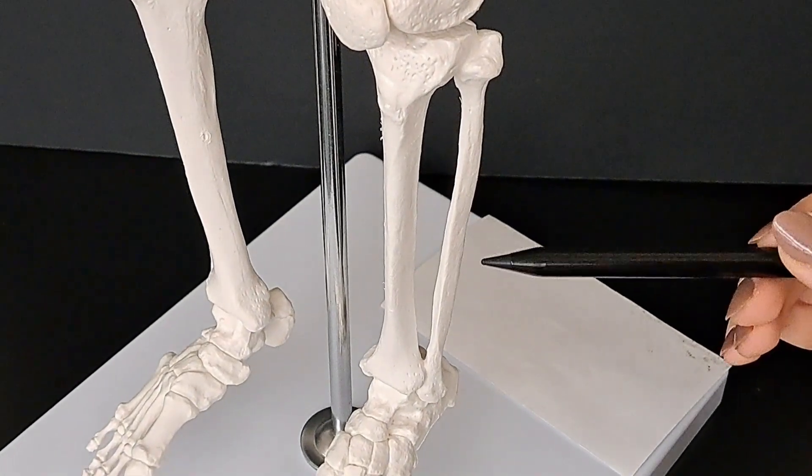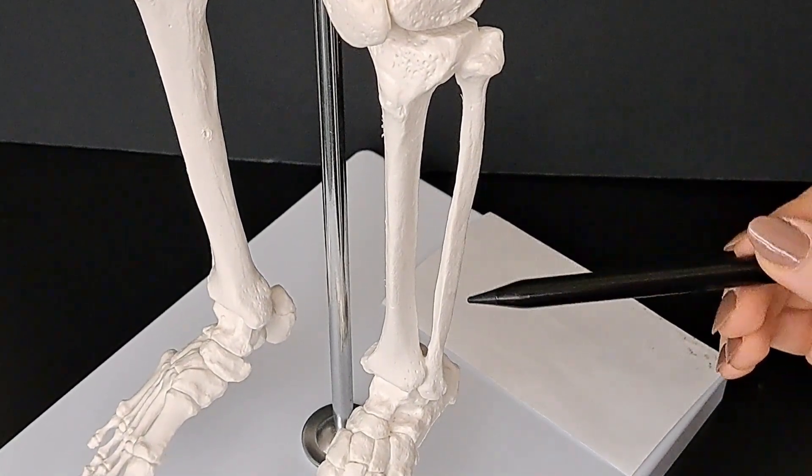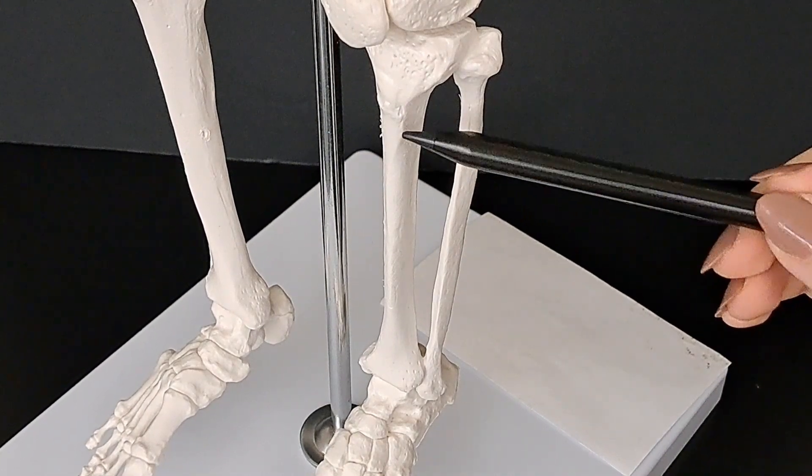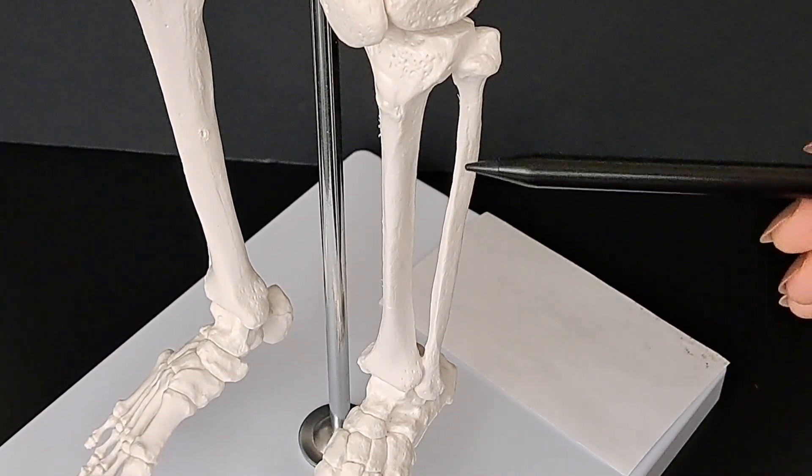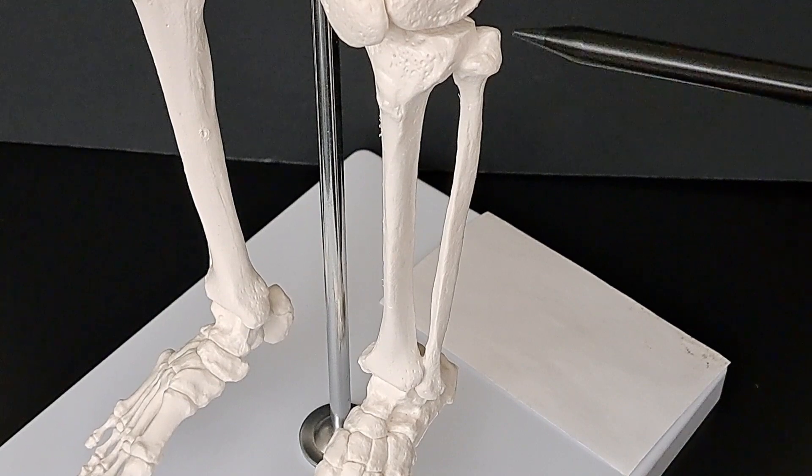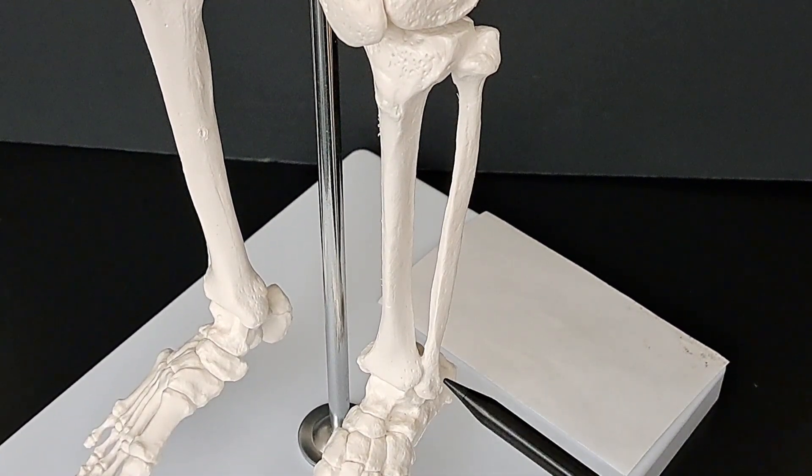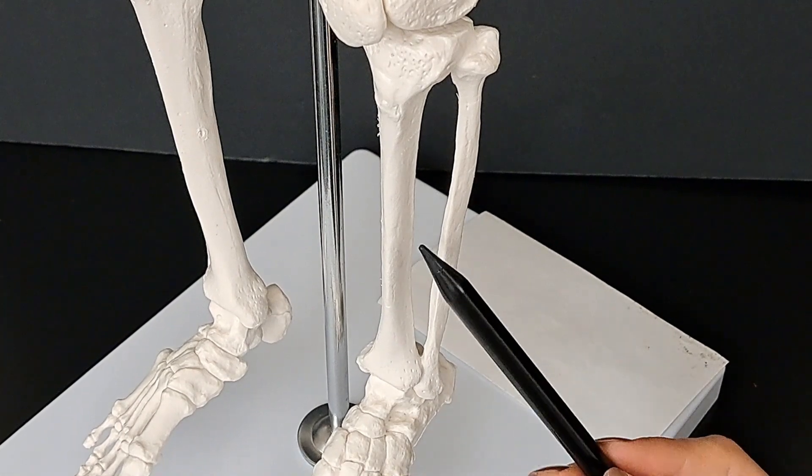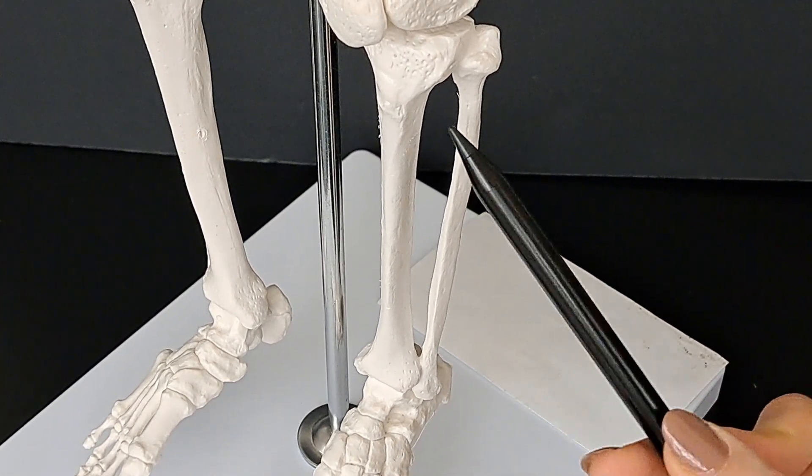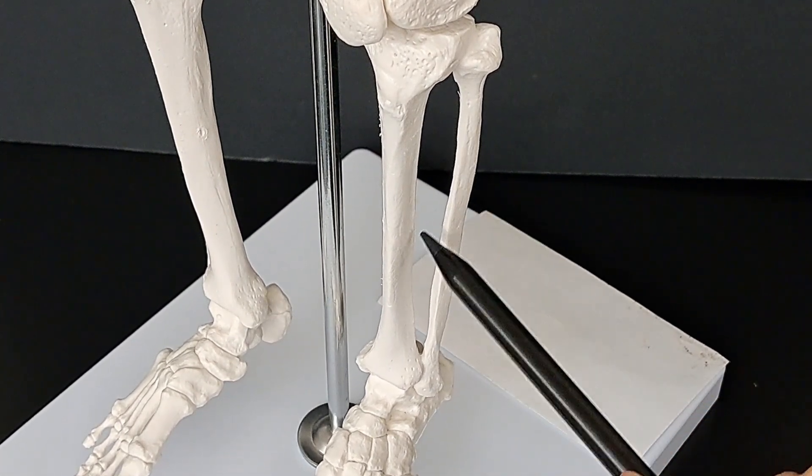We can see also the shaft of the fibula right here. The fibula and the tibia are connected together via the superior tibiofibular joint and the inferior tibiofibular joint. They're also connected to each other via the interosseous membrane, which is a membrane that fills this gap right here and holds both bones together.